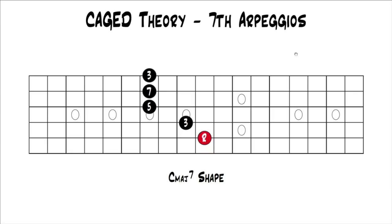This is part 16 from our series Cage Theory. If you'd like to go back and start at the beginning, you can click the link on the screen. So now that you know how to find triad arpeggios using the CAGED system, I'm going to show you the same thing with the next most important type of arpeggio, which are seventh arpeggios. We're going to look at major seventh, dominant seventh, and minor seventh arpeggios.